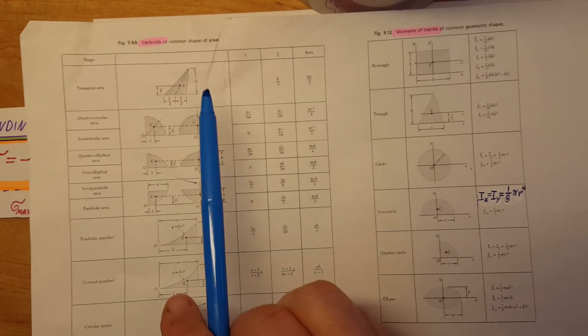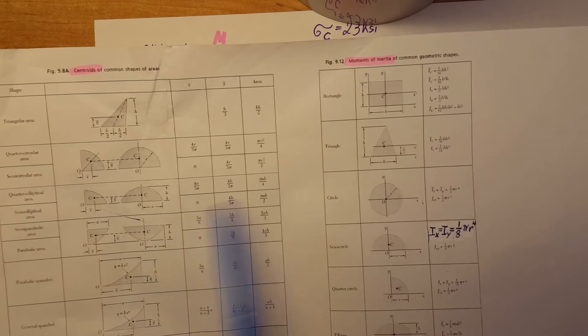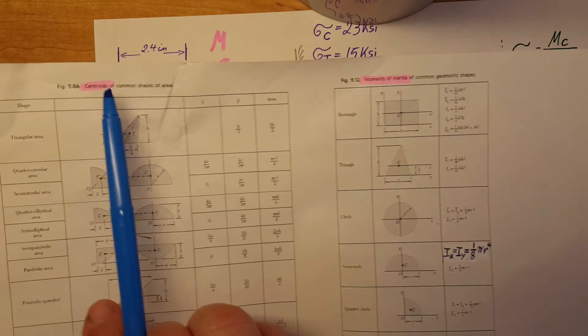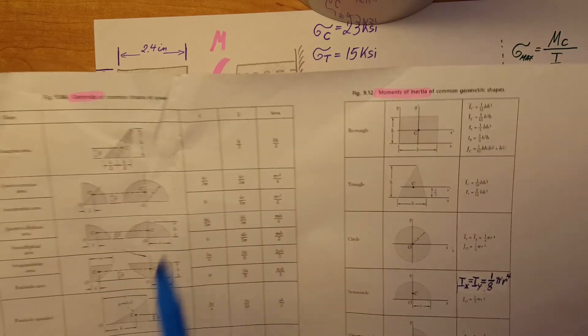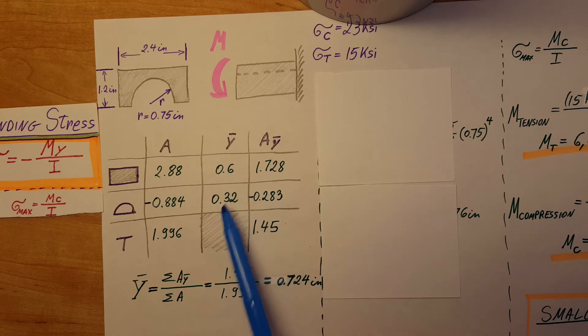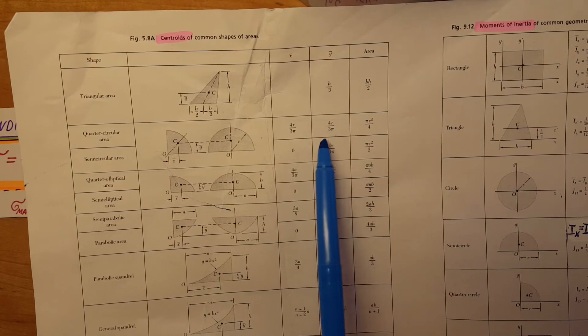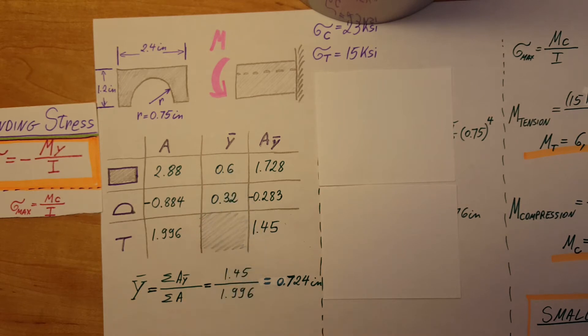The half circle, we'll rely on formulas from the back of any statics or strength of materials book - the centroid of common shapes, not the inertia. From here, half circle Y bar is 0.32, which is 4r over 3π. Now we can find A times Y bar, just multiply this by this and put it here. Don't forget the negative. This is the total.